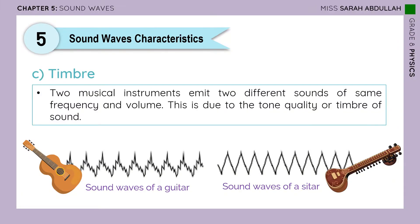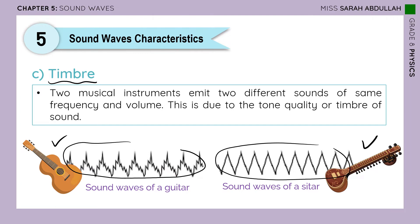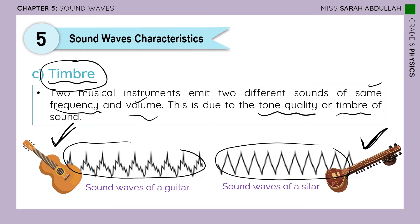The third characteristic is timbre. If two musical instruments both emit sound waves with the same frequency and the same amplitude, one sound can still be different from the other — for example, a guitar versus a sitar. This difference is due to tone quality, also called timbre. When two instruments emit sounds with the same frequency and volume but sound different, we say they have different timbre.